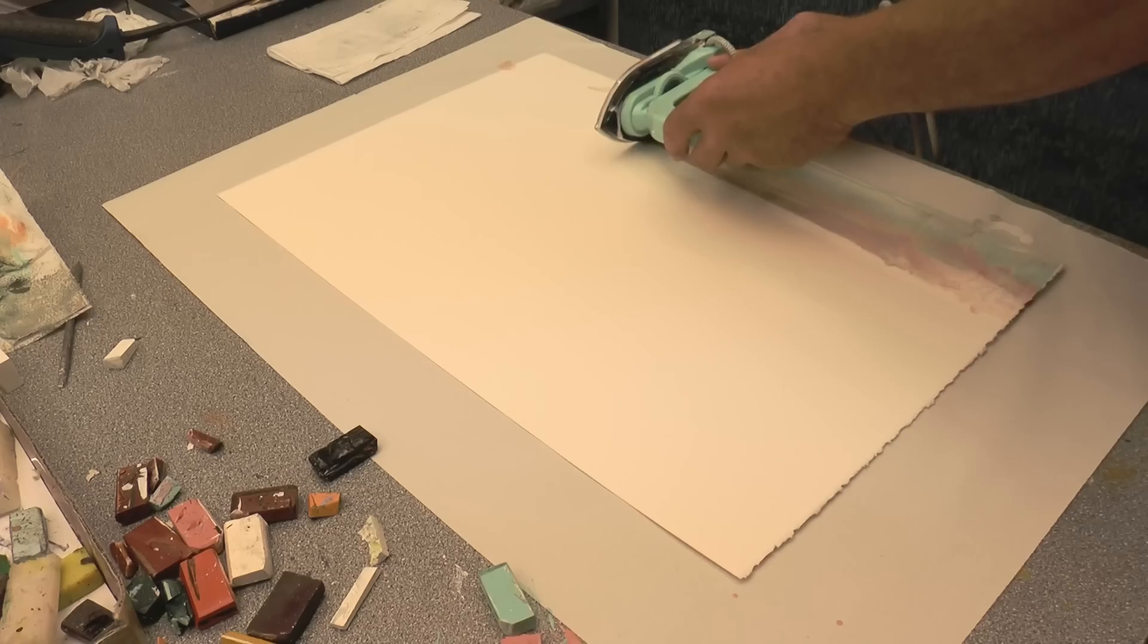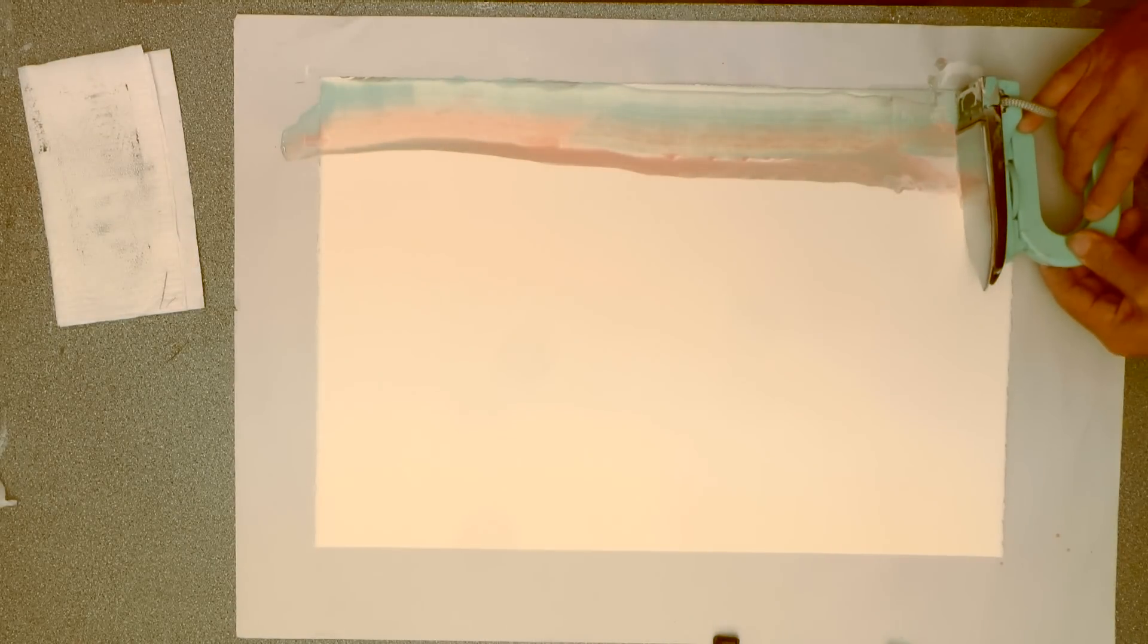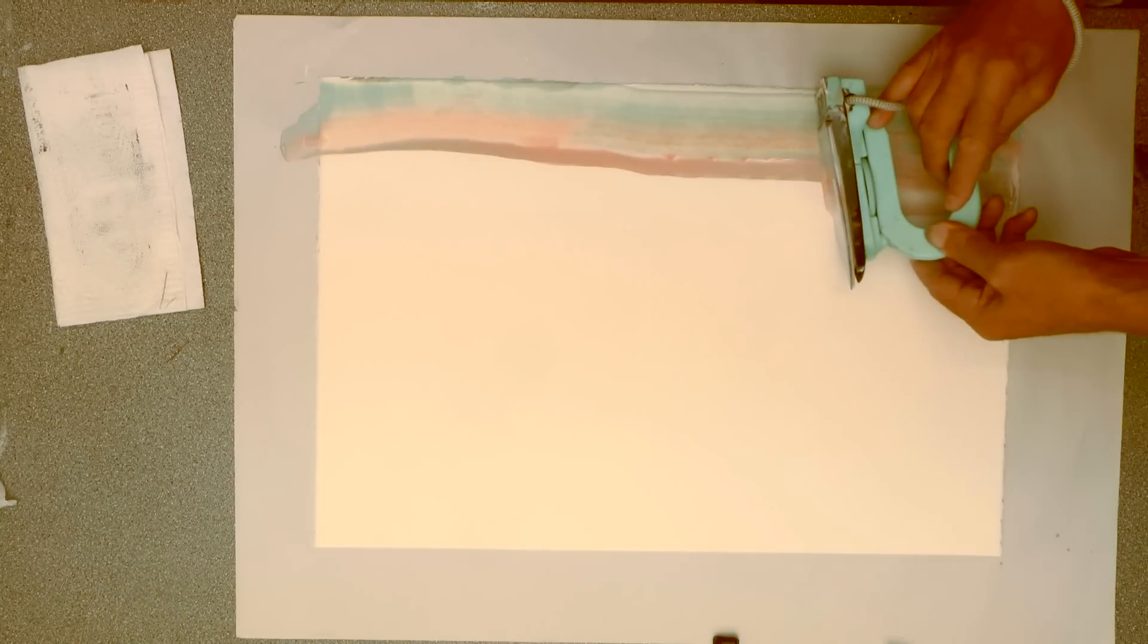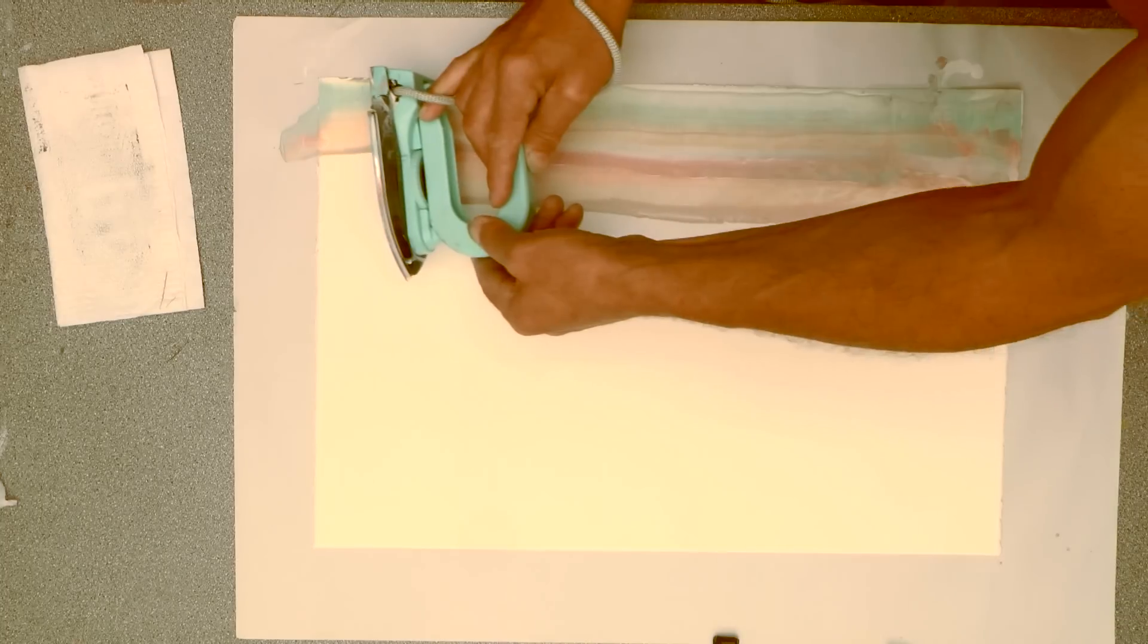And if you notice, the iron is slightly like a snowplough, so it's pushing the wax in towards the center of the paper. It's slightly angled. And I can go over that again straight away because there's already still wax there. Notice the angle of the iron and the steady pressure, the steady movement. All those things are important.